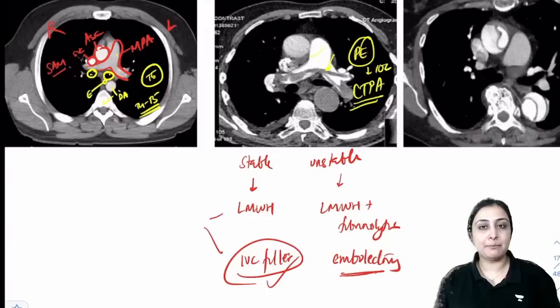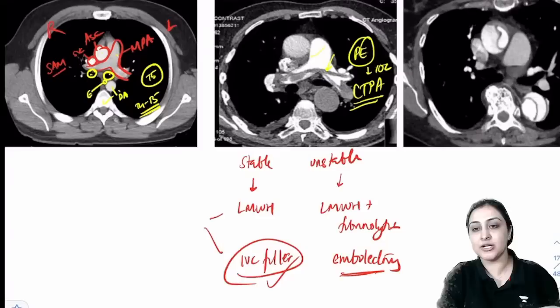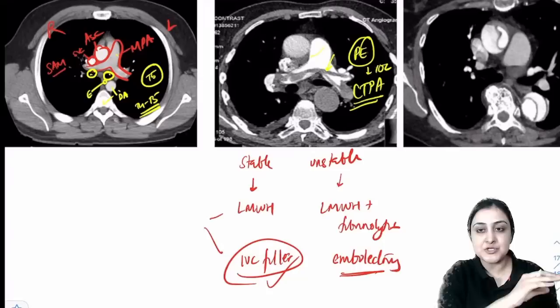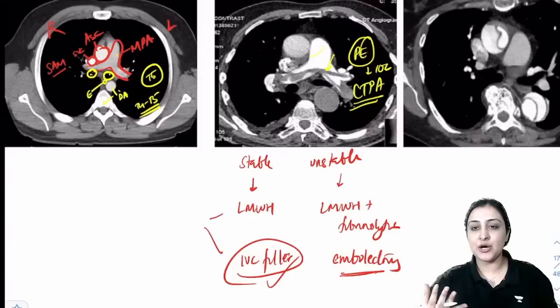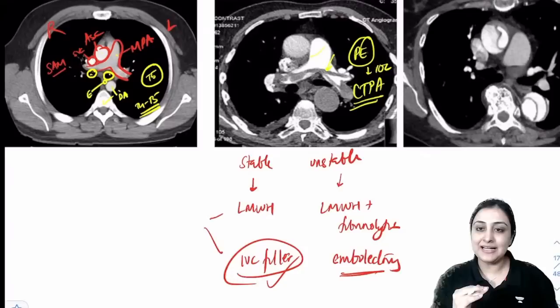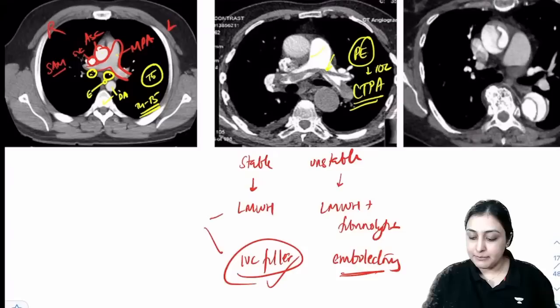PE approach: use Wells criteria. High clinical probability → CTPA. Low clinical probability → D-dimer; if negative → rule out PE; if positive → CTPA. History typically includes hip fracture, immobilization, pregnancy, OCP use, or long-haul flight (DVT risk factors).